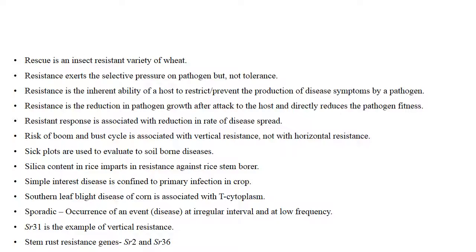Risk of boom and burst cycle is associated with vertical resistance but not with horizontal resistance. Silica content in rice imparts resistance against rice stem borer. Simple interest disease is defined by primary infection of a crop. Southern leaf blight disease of corn is associated with T cytoplasm (Texas cytoplasm). SR31 is an example of a vertical resistance gene for stem rust; other stem rust resistance genes include SR2, SR36, and others.